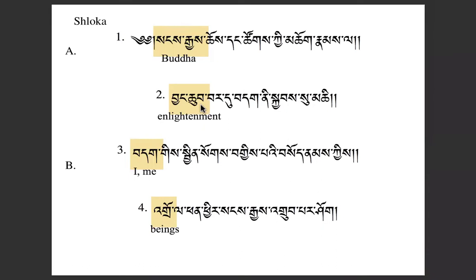Bardu means until. So Jung-chub bardu is until enlightenment. The next word is dak, followed by the particle ni, giving us dak-ni.